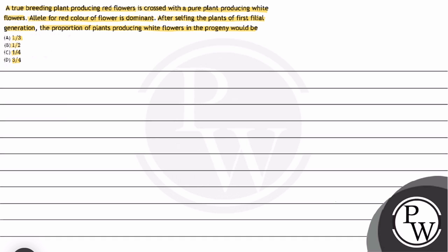Let's clearly understand this question. There is a true breeding plant producing red flowers. That is dominant - capital R and capital R. It is crossed with a pure plant producing white flowers. Red flowers are dominant over white flowers. That is small r and small r.